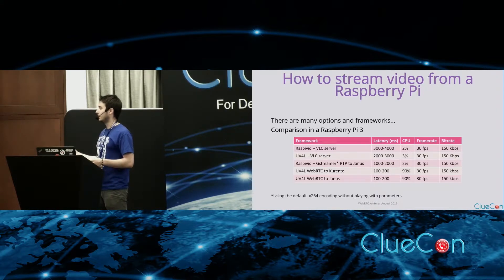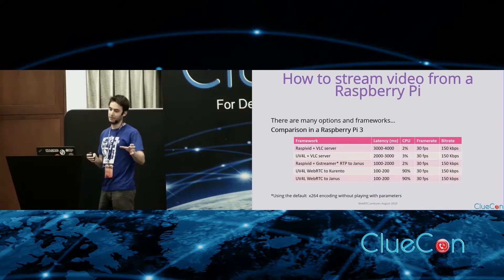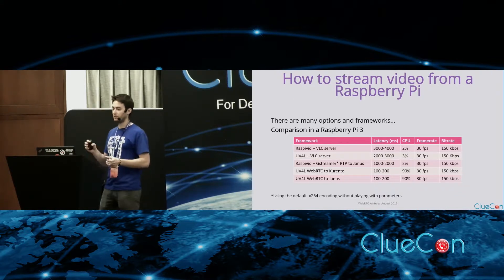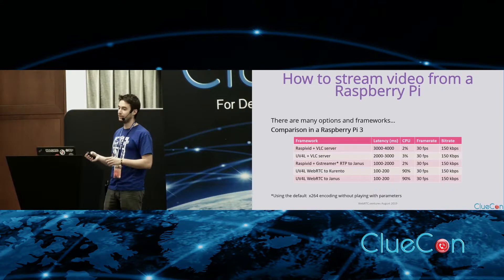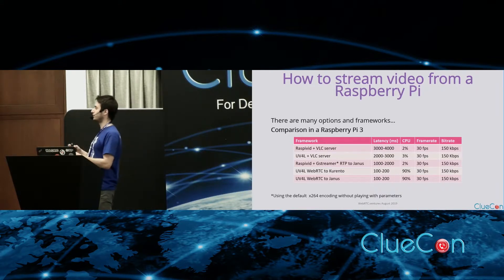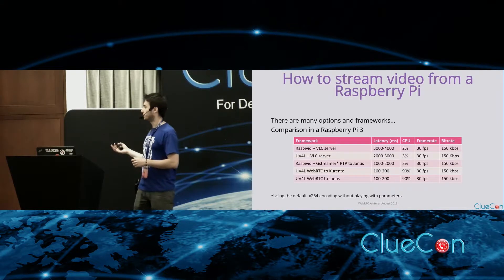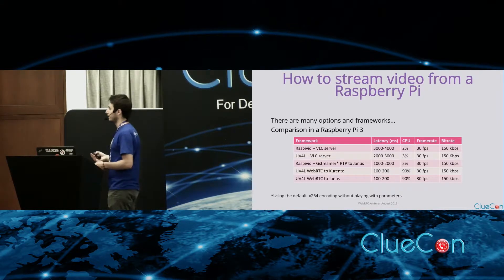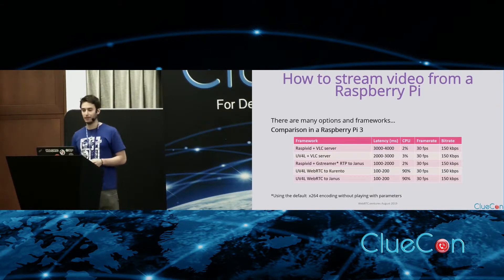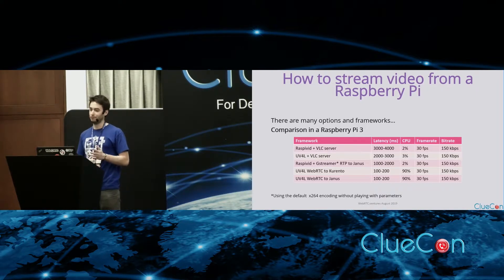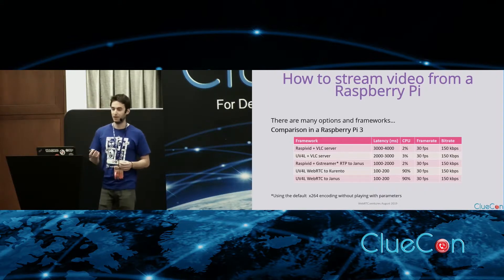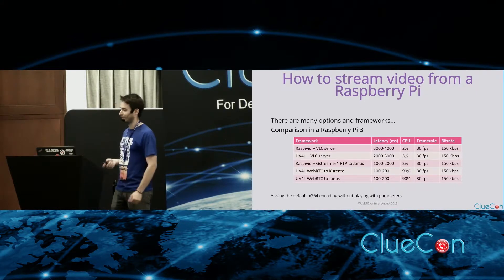When using RaspiVid — just the driver for getting the camera — and GStreamer without optimizing it, we were getting about one to two seconds of latency, but still very low CPU, which is interesting for Raspberry Pi. Then when using WebRTC, the CPU spikes a lot — you can be around 80–90% CPU usage — but the latency is really, really low.